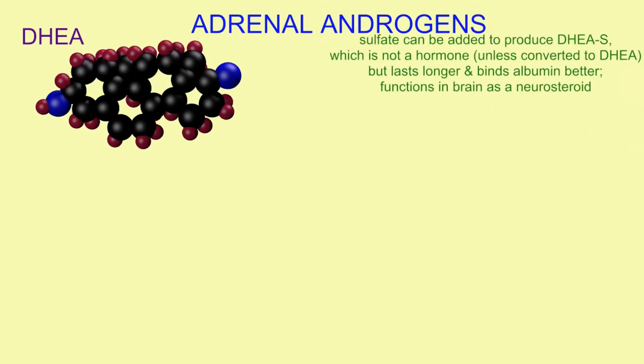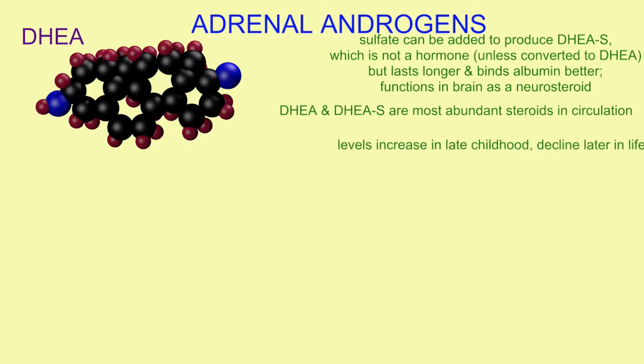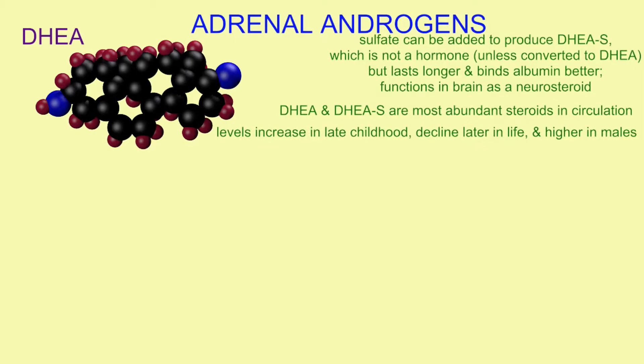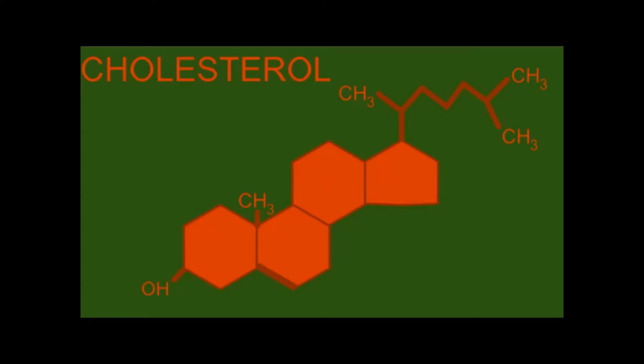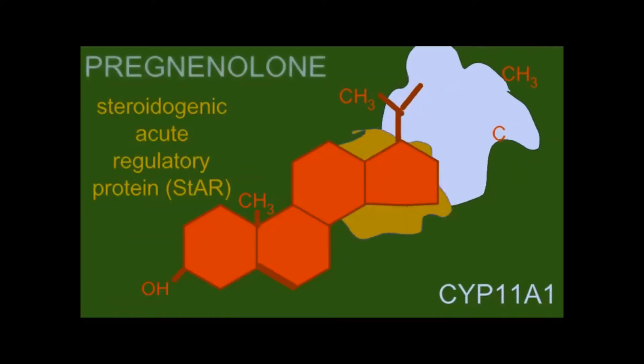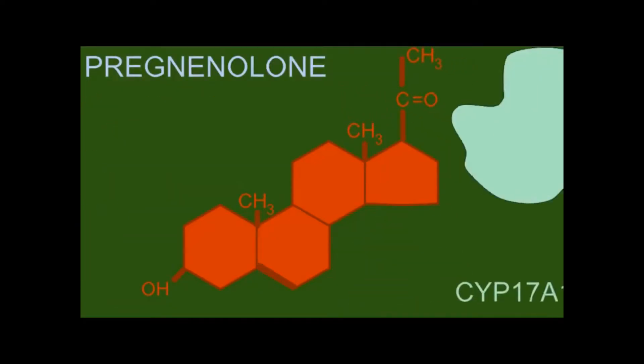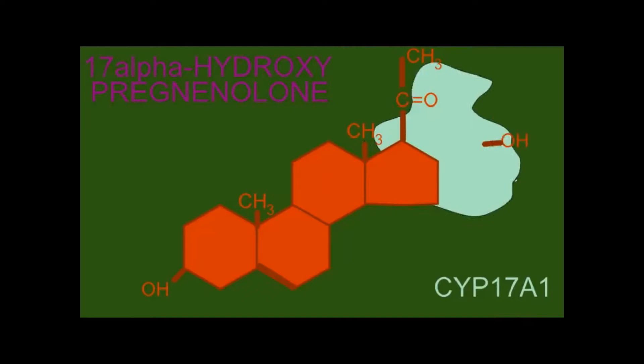A sulfate group can be added to DHEA, which allows it to last longer and be transported differently through plasma, binding to albumin better. Although it is not a hormone unless the sulfate is later removed, it can function as a neurosteroid in the brain. DHEA and the sulfated form are the most abundant steroids in circulation.